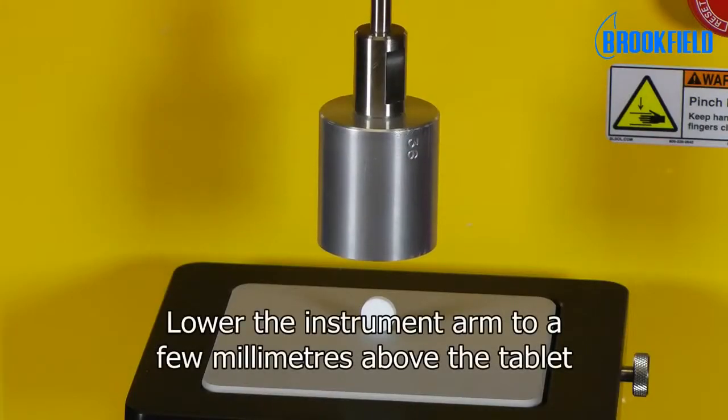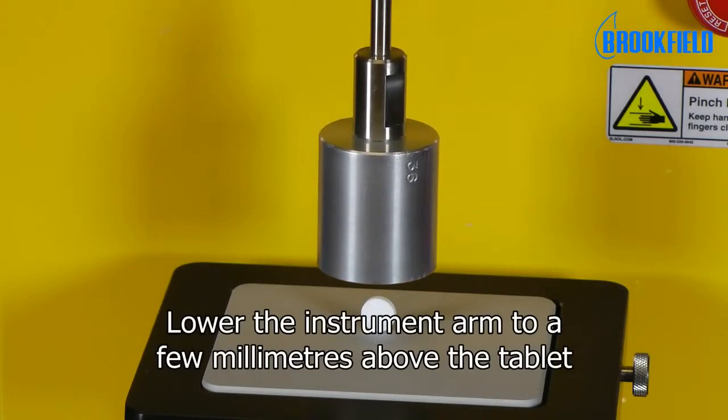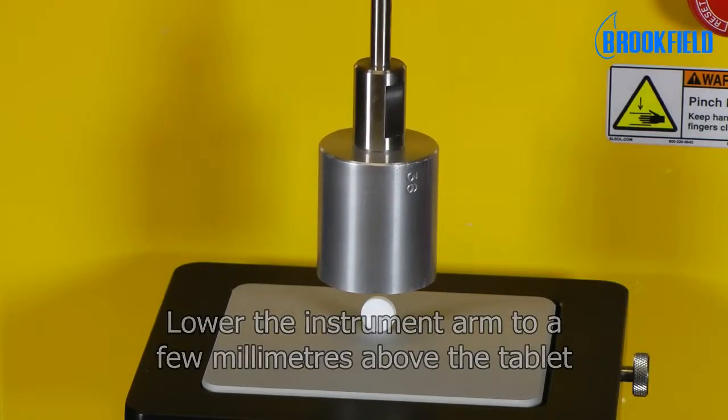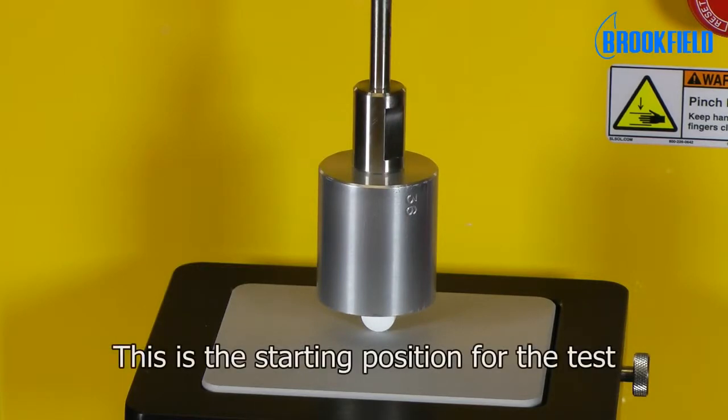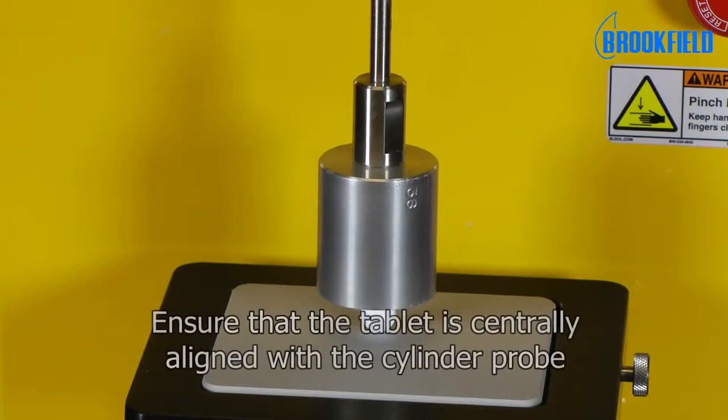To ensure that the tablet is centrally under the probe, lower the instrument arm to a few millimeters from the tablet surface. This can be the starting position for the test. Ensure that the tablet is centrally aligned under the probe.